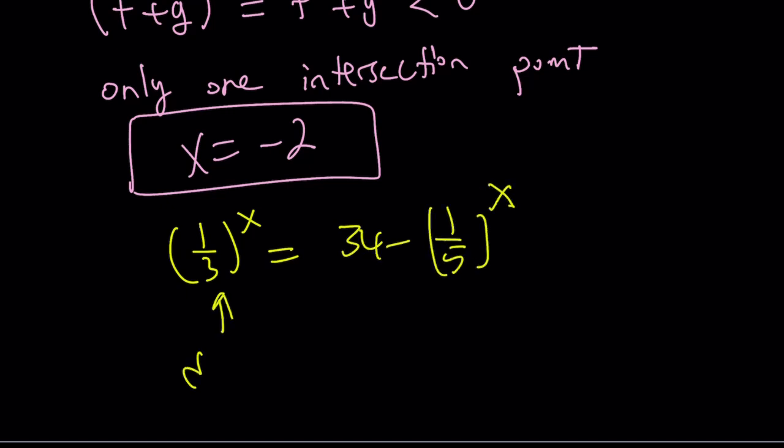This is a decreasing function and this is an increasing function because it's a decreasing function being subtracted from a constant. Therefore, it's increasing and a decreasing function and an increasing function are always going to be intersecting at one point.